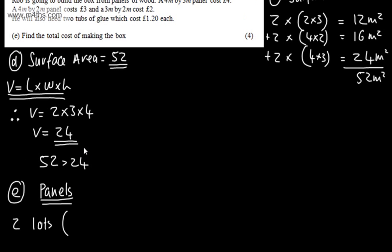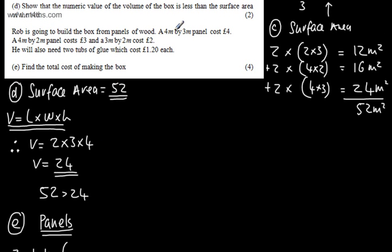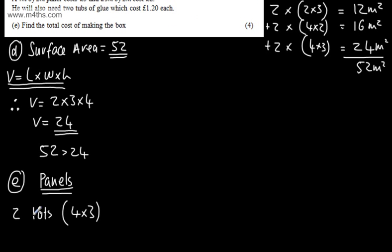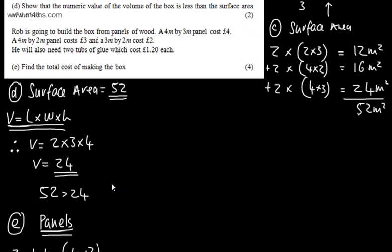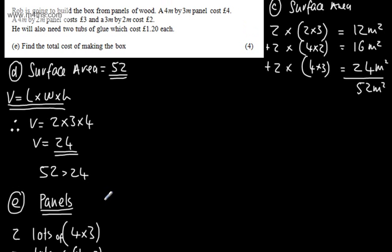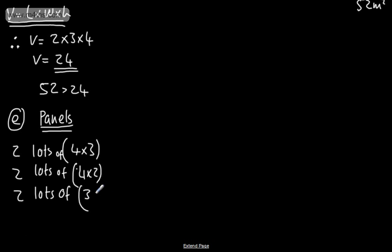So what I'm going to have then is two lots of, and we can do them in the order they've given, it really doesn't matter. So we'll have two lots of the 4 by 3, so 4 times by 3. We will have now the next one, and that's going to be two lots. So we'll have two lots of now the next one, which is going to be the 4 by 2. So the 4 by 2, the 4 by 2. And then we're going to have two lots of now the last one remaining, which is going to be the 2 by 3 or the 3 by 2. They've said 3 by 2, it's exactly the same thing.